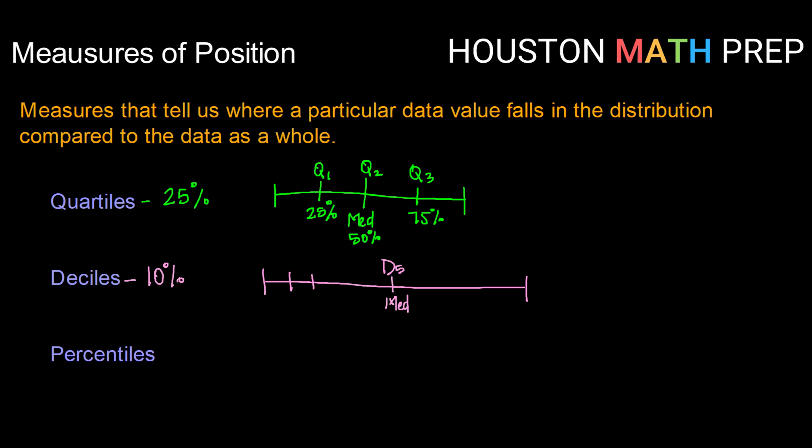And there would be 1, 2, 3, 4 below it. So D1, D2, D3, and D4. That would represent 10%, 10%, 20%, and so on.